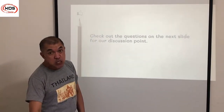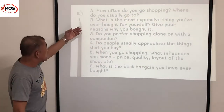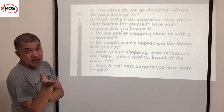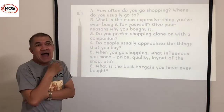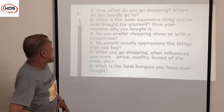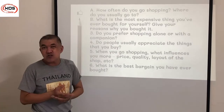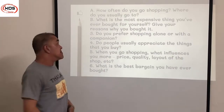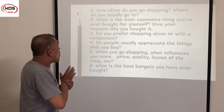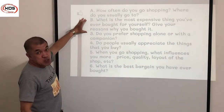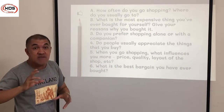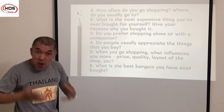Now we're going to move on to the discussion part of the lesson. Letter A: How often do you go shopping, and where do you usually go? I would say I go shopping rarely because I do not have time. I usually go to Vincum Mega Mall. Letter B: What is the most expensive thing you've ever bought for yourself? Give your reasons. You can record yourself and send your response to the KOS website, and we will give you feedback on how to improve.